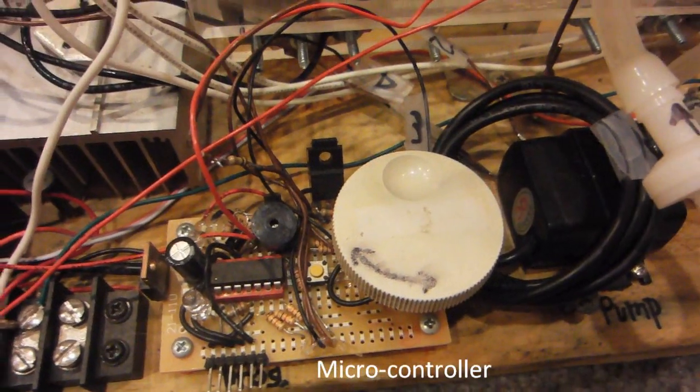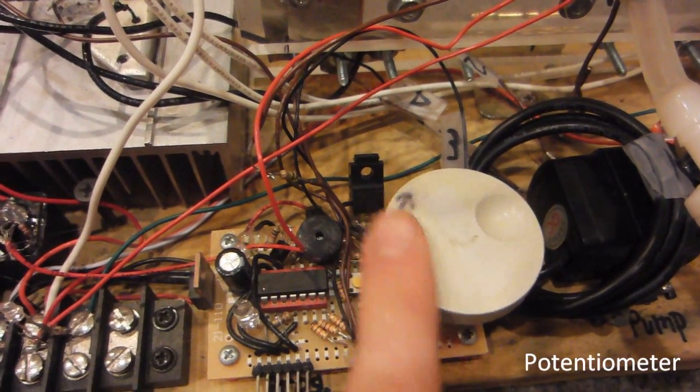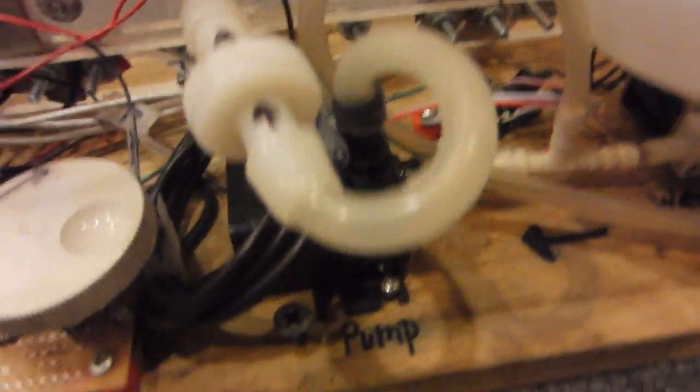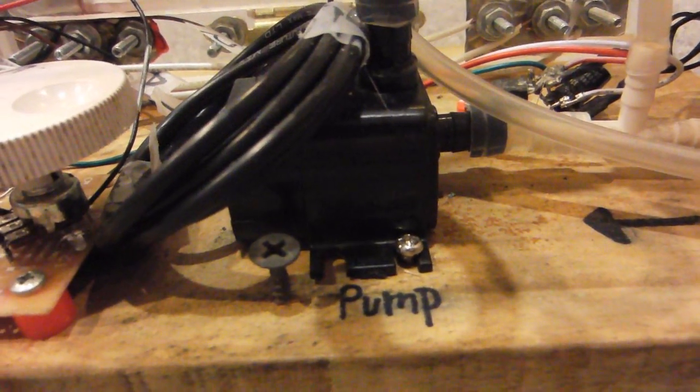A microcontroller regulates gas output and water level. A potentiometer is used for adjusting the gas output. A pump continually circulates water through the system.